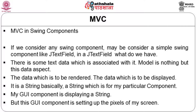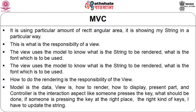The GUI component is displaying a string. It sets up the pixels of the screen, uses a rectangular area, and shows the string in a particular way. This is the responsibility of the view. The view uses the model — it knows what string is to be rendered, what font to use. The font name is part of the model, but how it is rendered is the responsibility of the view. Model is the data; view is the how-to-render, how-to-display, the presentation part.